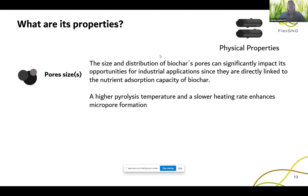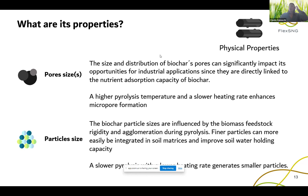For physical properties, the first one is pore size. Biochar is a porous material, and pores can be distributed in different ways on the biochar surface. Higher porosity can significantly impact industrial application opportunities. For example, micropores are highly desirable because they are directly linked to higher nutrient absorption capacity when used in soil amendment. To obtain more micropores, we need a higher pyrolysis temperature and a lower heating rate. Finer particles are desirable for soil amendment, as they integrate more easily into soil matrices and improve soil water holding capacity.